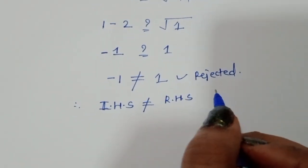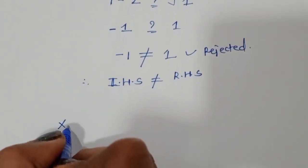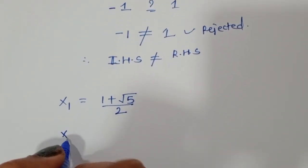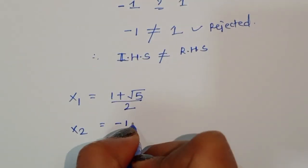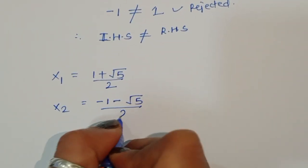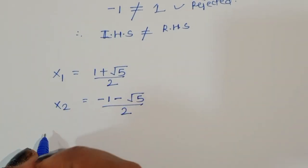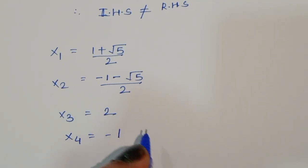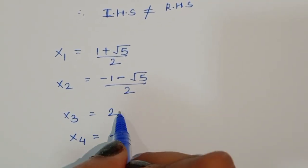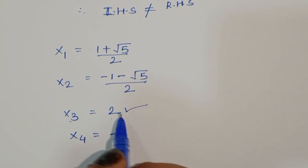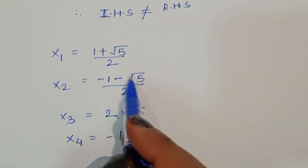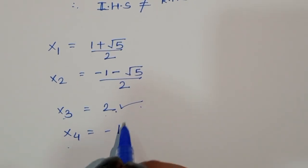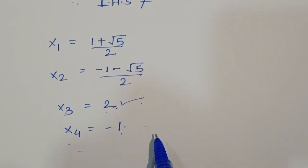In summary: x1 equals 1 plus root 5 divided by 2, x2 equals 1 minus root 5 divided by 2 are imaginary solutions. x3 equals 2 is the only valid real solution. x4 equals minus 1 is rejected. Therefore x equals 2 is the solution to this equation.